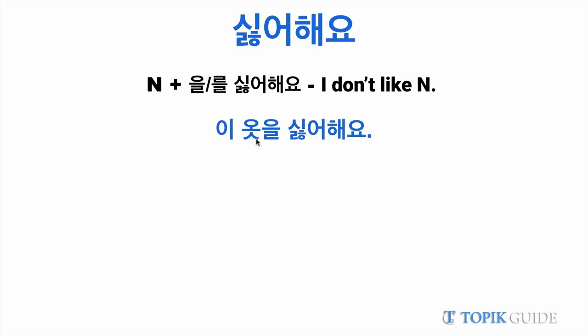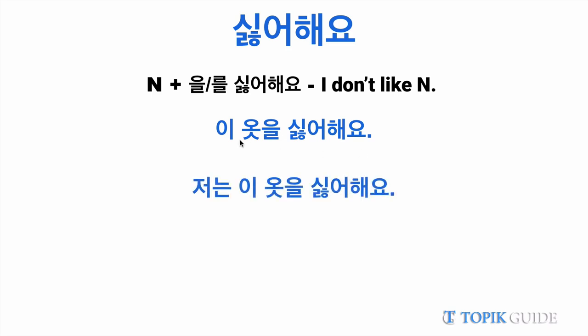When you use shiroyo you say 'ee oshi shiroyo,' but when you want to use shiroheyo you say 'ee osu shiroheyo.' So basically it's 'chonen ee osu shiroheyo.' They are both the same thing — shiroyo and shiroheyo are just different ways to express the same thing.